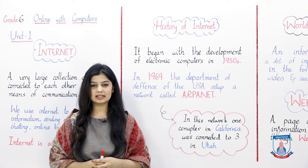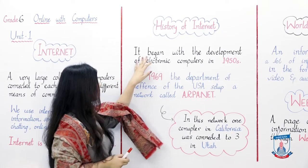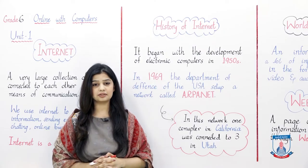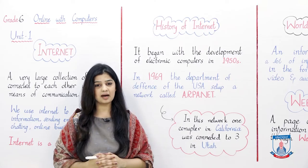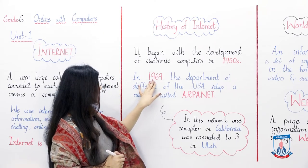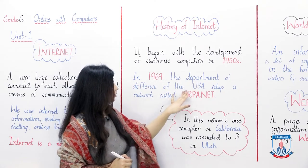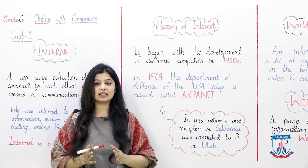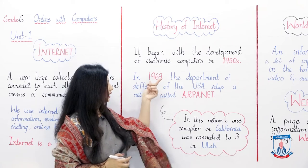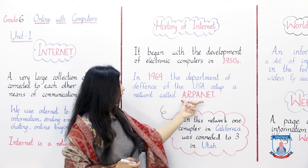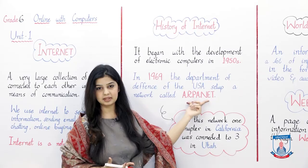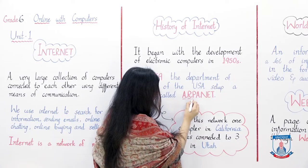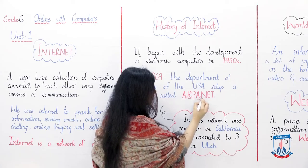Now we are going to learn the history of the internet. It began with the development of electronic computers in the 1950s. In 1969, the Department of Defense of the USA — United States of America — set up a network called ARPANET. ARPANET stands for Advanced Research Projects Agency Network.